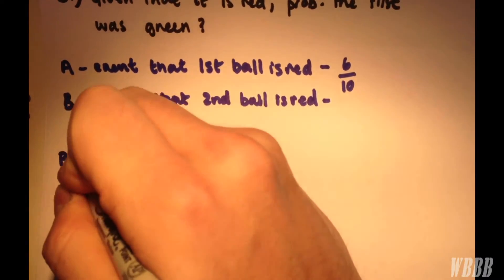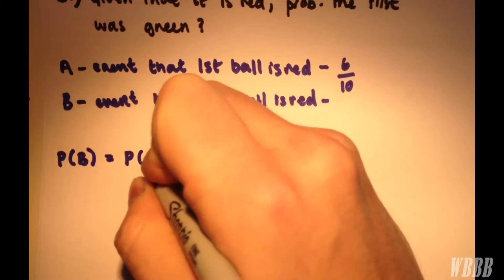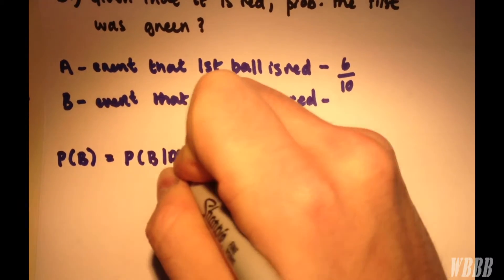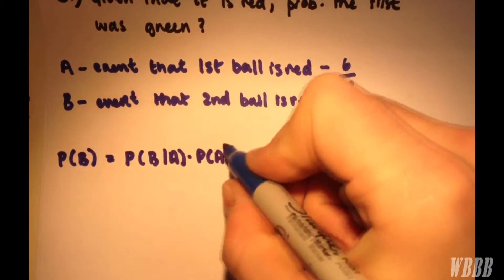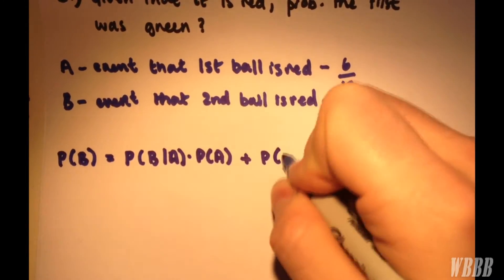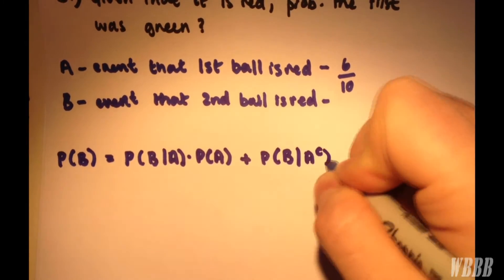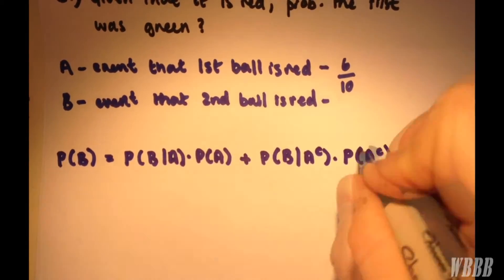Probability of B equals probability of B given A times probability of A, plus the other possibility: probability of B given not A times probability of not A.